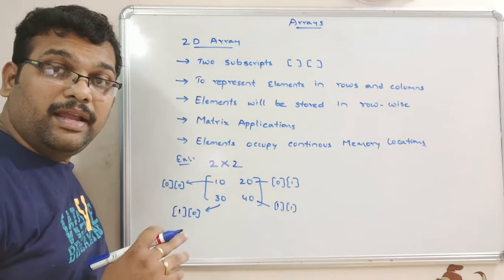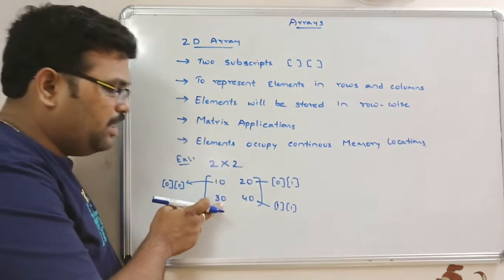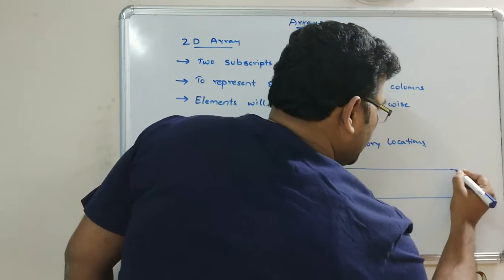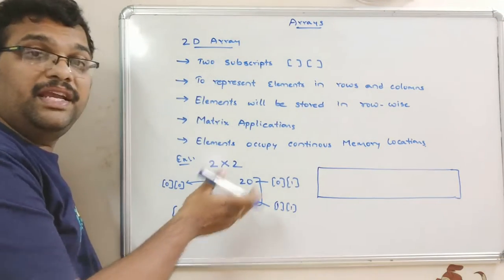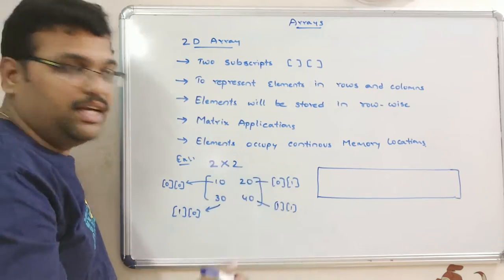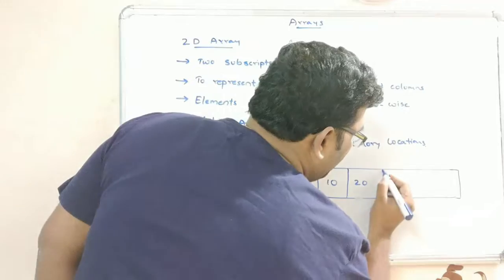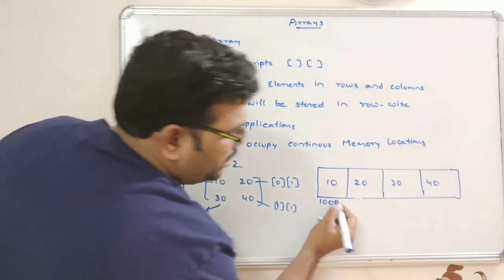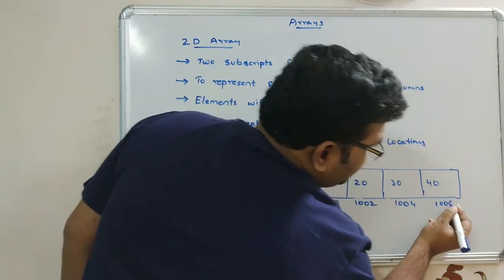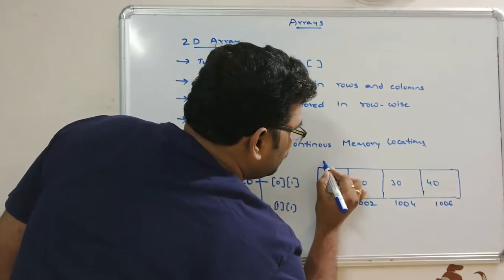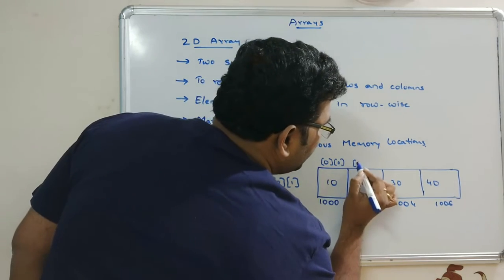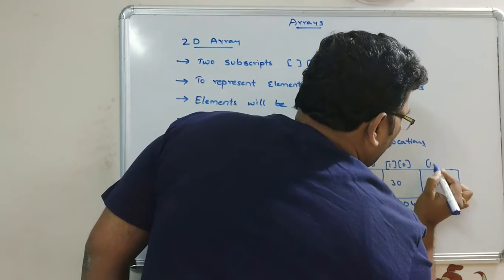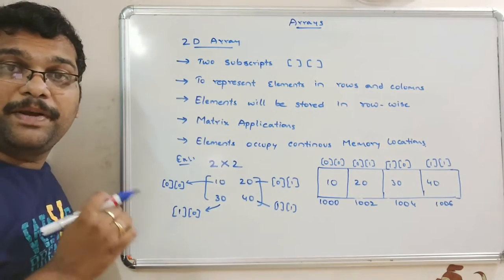The elements are stored row-wise: first element at address 1000, second at 1002, third at 1004, fourth at 1006. The index [0][0] and [0][1] end the first row, then [1][0] and [1][1] follow. Row-wise, first row is occupied, then the second row is occupied.